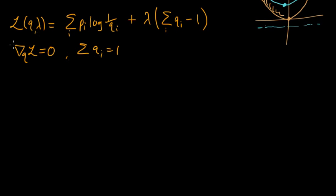We would like to solve these equations for q and lambda. If we can solve those equations, then the q's will give us a critical point of the restricted function — f restricted to the set of q's satisfying the constraint. A brief reminder: if we can get a critical point of the restricted function, we know that will be a global minimum of the constrained problem, because our restricted function is strictly convex.